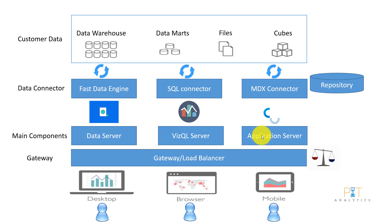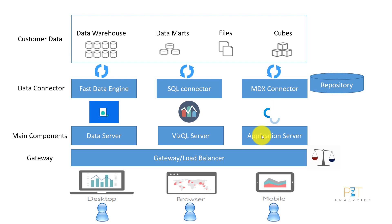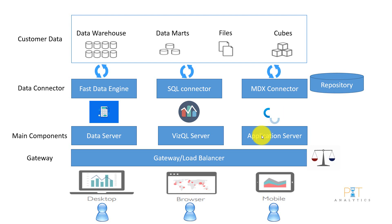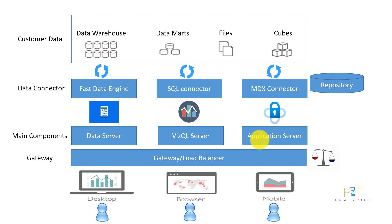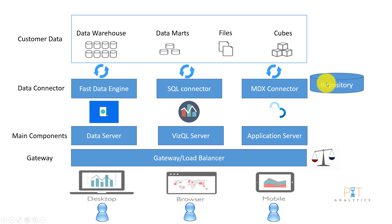Application Server takes care of the security part. For example, if I am a user of the North region, I can only see data for the North region — I cannot see data for any other region. Similarly, if I am an HR manager, there are multiple reports on HR as well as Finance, and I should not have access to Finance reports because I don't belong to that department. All those things are taken care of by the Application Server.